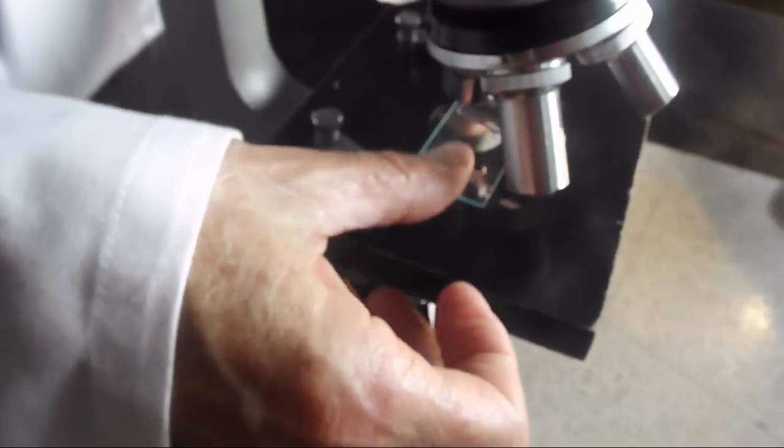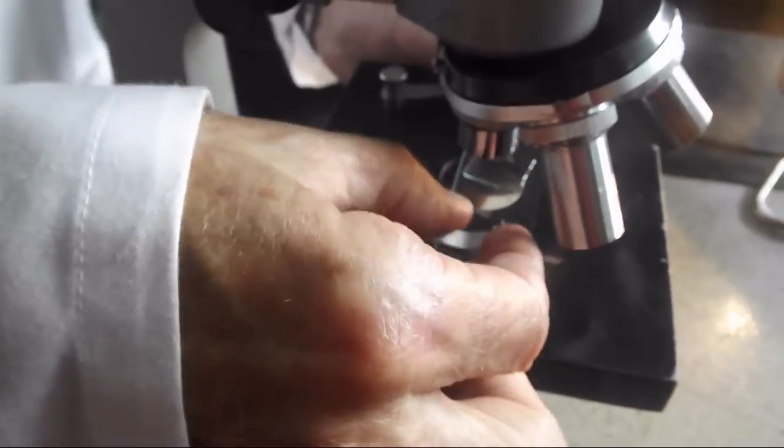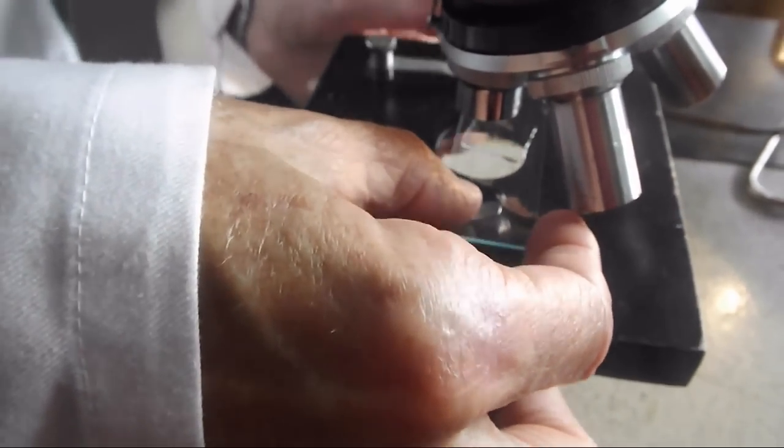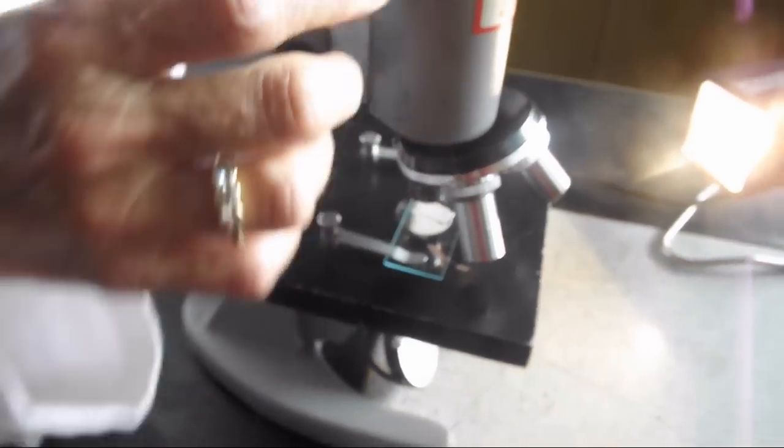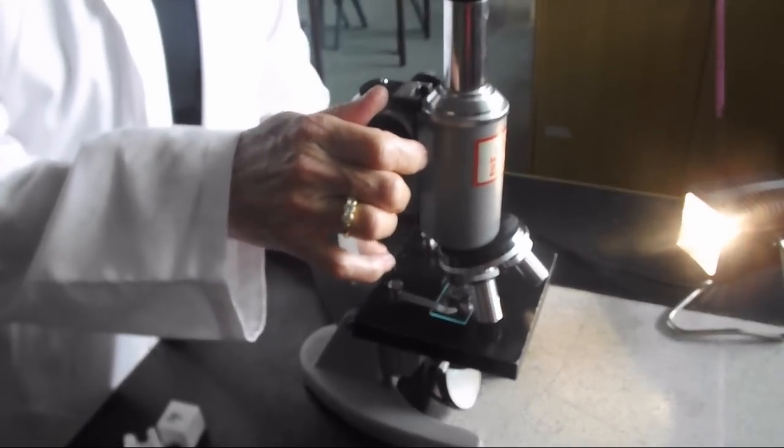You place the slide on the stage and you can secure it with the clips. The next thing we do is we have to rack down so that we're using on low power. We rack down so that we don't smash through the slide.